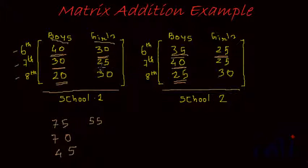Similarly, girls in class 7 in school 1 and girls in class 7 in school 2, add them up, you get 25 plus 25, which is 50. Girls in class 8 in school 1, girls in class 8 in school 2, add them up, you will get 30 plus 30, which is 60.